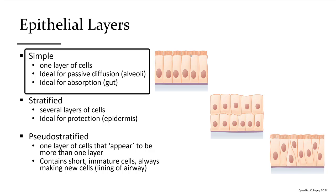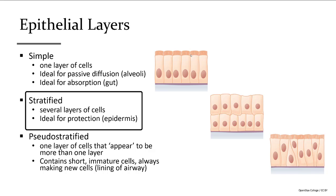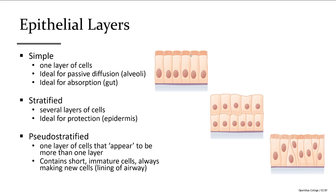Simple, or one layer, is ideal for passive diffusion — meaning in alveoli we let oxygen across, or carbon dioxide. Or absorption — in our gut we let nutrients in. Stratified means we want more protection, so we have more cell layers. We also see this in glands. Pseudo-stratified is only going to be in the lining of the airway. It has such a great turnover that you have small baby cells and taller, more mature cells always growing at different levels of development. So it has a stratified look, but they're only one cell layer thick.